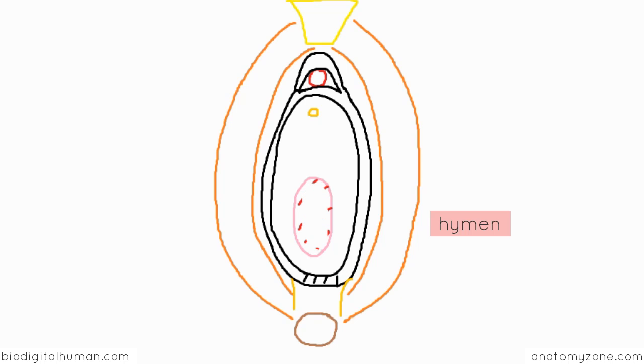So after perforation of this hymen, you get remnants of the membrane which surround the vaginal orifice. The vaginal orifice is also known as the introitus.